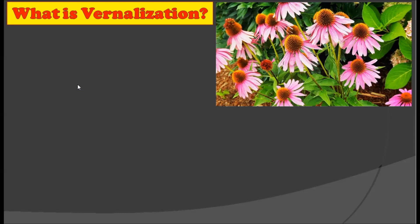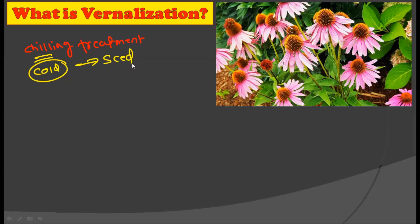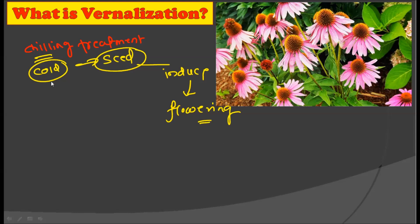Now first of all, what is meant by vernalization? The typical meaning of vernalization is giving the chilling treatment or cold treatment to the seeds or seedlings to induce early flowering. So that literally means the chilling or cold treatment given to seeds to induce early flowering in plants is termed as vernalization.